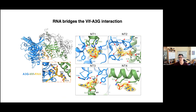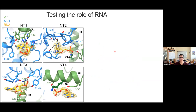VIF makes a variety of sequence non-specific interactions with the RNA — aromatic stackings with bases, salt bridges, and hydrogen bonds. APOBEC, on the other hand, makes what appear to be more sequence-specific types of interactions. You can see Watson-Crick base pair mimicry between the backbone of A3G and this purine nucleotide. APOBEC looks like it is binding purines. So the first thing we wanted to do is test the role of RNA.